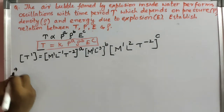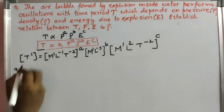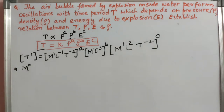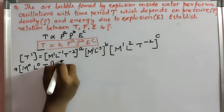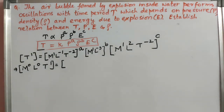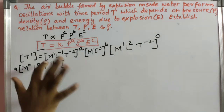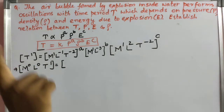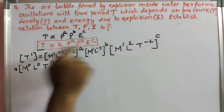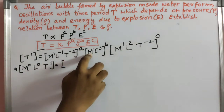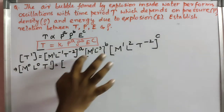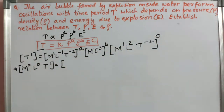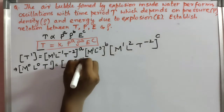Left hand side: T power 1 — mass to power 0, length to power 0, time to power 1. Carefully see the right hand side. Count M's: M¹ raised to A gives M^A; M¹ raised to B gives M^B; M¹ raised to C gives M^C. So right hand side has M^(A+B+C).